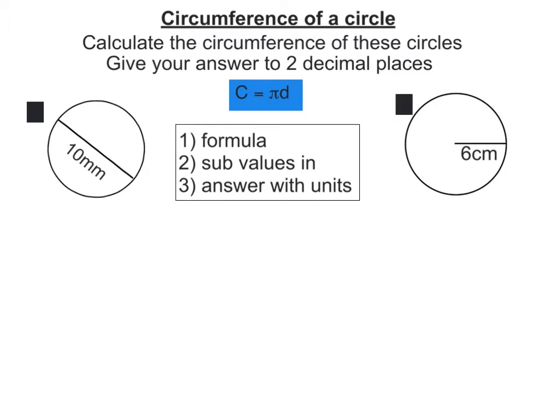In this video we're going to work out the circumference of these circles. We're going to use this formula here that circumference is equal to pi times the diameter, or C equals πd.